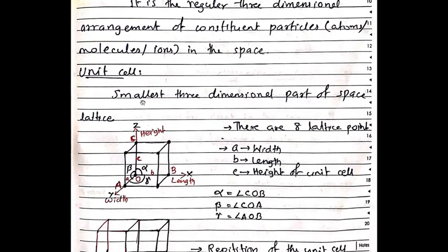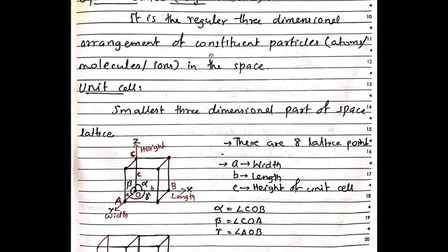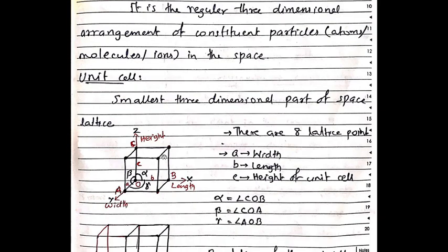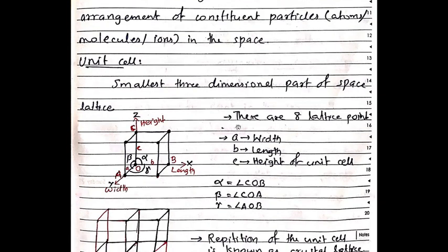What is a unit cell? A unit cell is the smallest three-dimensional part of a space lattice — the smallest repeating unit of the space lattice, known as the unit cell. This is a cubic unit cell. In this unit cell, there are eight lattice points.